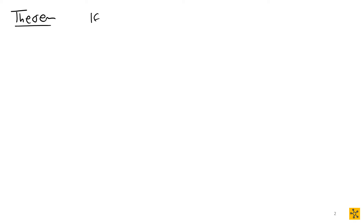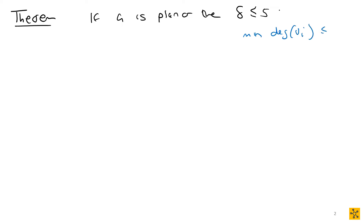We're going to look at the last proof of planar graphs. The theorem states: if G is planar, then the minimum degree delta of the vertices must be less than or equal to five.